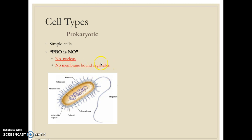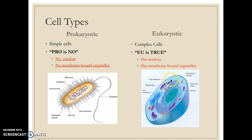Some things prokaryotes share in common with eukaryotes: eukaryotes do have a nucleus and membrane-bound organelles. Both share the presence of a cell membrane, DNA, and ribosomes, which are very important for making proteins. The big main difference is that eukaryotes have a nucleus, are larger and more complex, and have membrane-bound organelles, while prokaryotes have no nucleus, no membrane-bound organelles, and are a lot simpler.